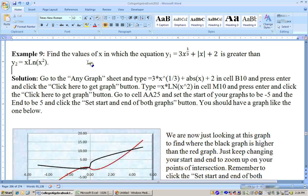Okay, on this example it says find the values of x in which this equation, y1 equals 3x to the 1 third, that's the same as 3 times the cube root of x, plus the absolute value of x plus 2 is greater than this equation, x times the natural log of x squared.